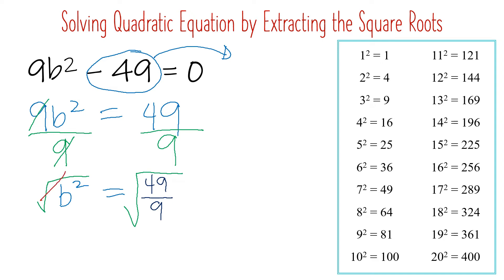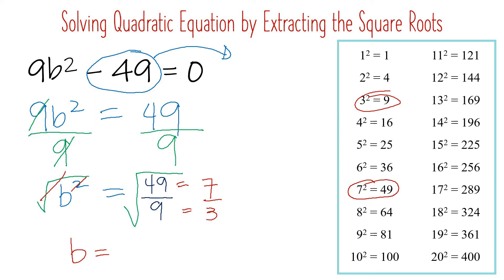Cancel the radical, and now we only have b on this side. Get the square root of 49, which is 7 — from 7 times 7 — and the square root of 9 is 3, from 3 times 3. Therefore, the answer is positive and negative 7 over 3. That is already the answer.